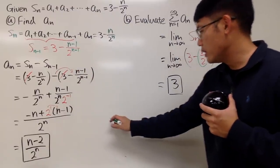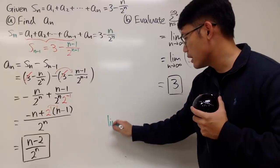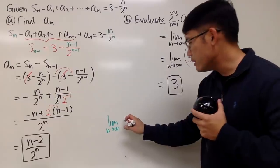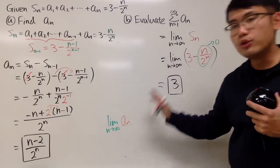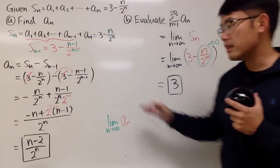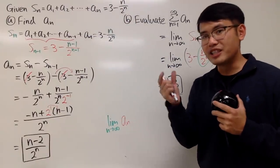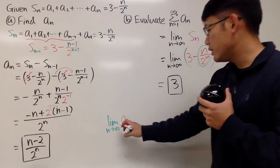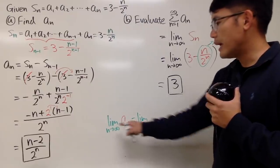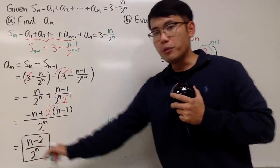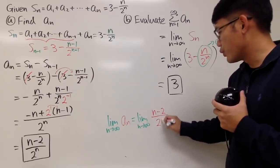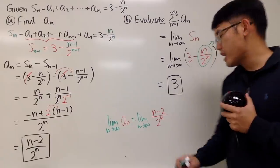$a_n$ actually converges to 0. If you check the limit as $n$ goes to infinity of $a_n$. And be really careful, there are two very different things. This right here is the partial sum, right? The n's partial sum. And this is just the term, the $a_n$ term. And if you look at this right here, of course, you get the limit as $n$ goes to infinity. And you are looking at the $a_n$ formula that we got, which is $(n-2)/2^n$ power. Let me tell you.